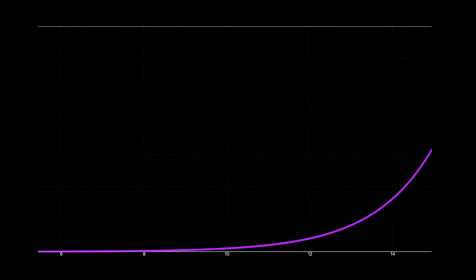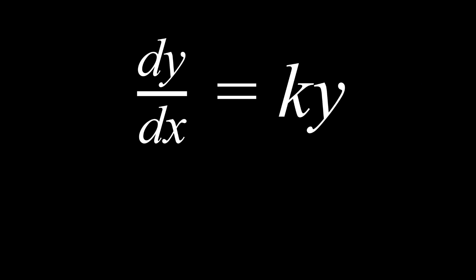At any given point on an exponential curve, the function is growing at a rate proportional to the value at that point. The larger the value, the faster the growth. We can express this formally with this elementary differential equation. The rate of growth, or rate of decay, is proportional to the current value by the factor k.